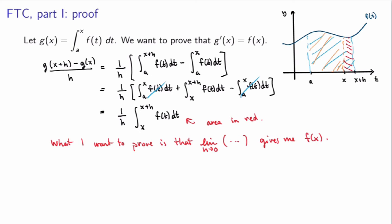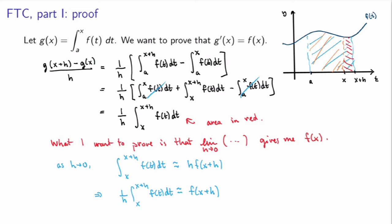What I want to prove is that the limit of this expression gives back f(x). Let's first give a holistic argument of why this is true. Looking at the graph, the integral calculates the area in red. If h is very small, we can approximate this area as being a rectangle: the width is h, times the height, which is the value of the function at x+h. So 1/h times the integral as h goes to 0 becomes approximately f(x+h), and as h goes to 0 this goes to f(x). This is a heuristic argument, but you see it makes sense — the difference quotient as h goes to 0 gives you back f(x).